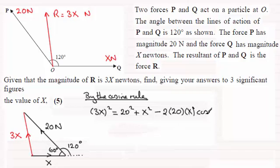So if we clean this up, what we've got here is 9X squared and then we've got 20 squared which is 400, and then plus X squared. And as I say, 2 times cos 60, 2 times half is 1, so you're just left with minus 20X.